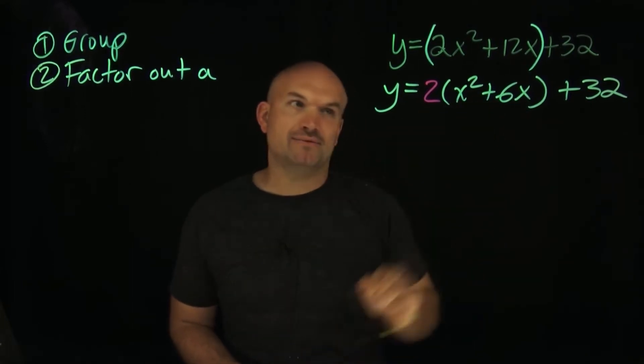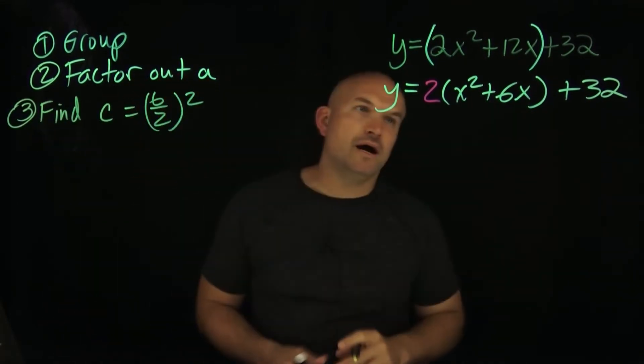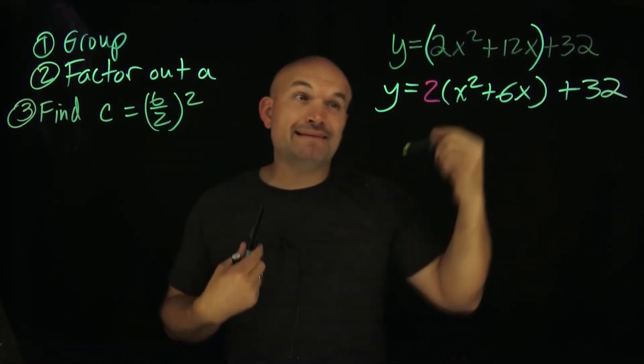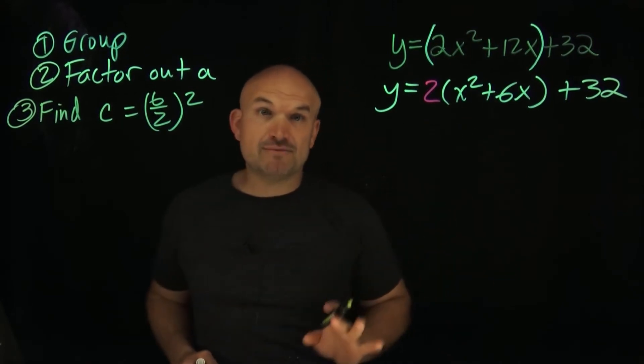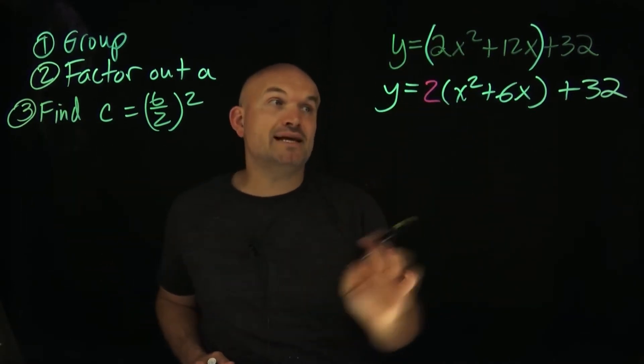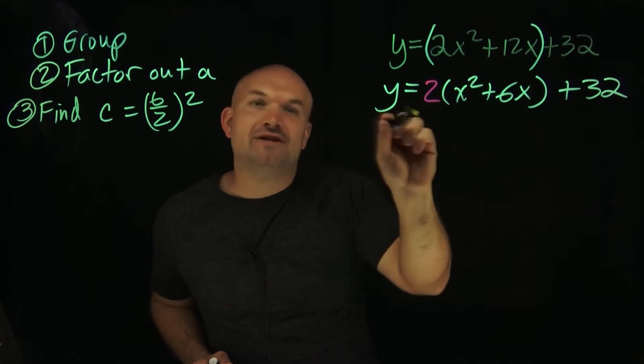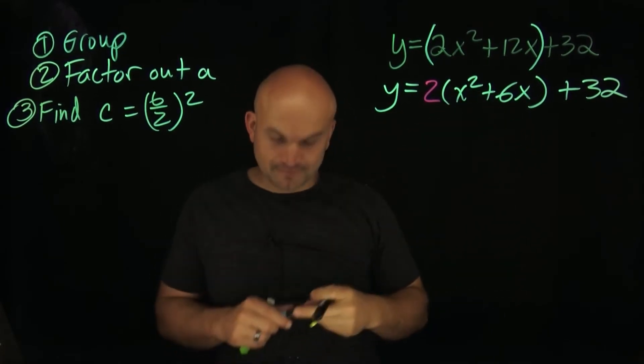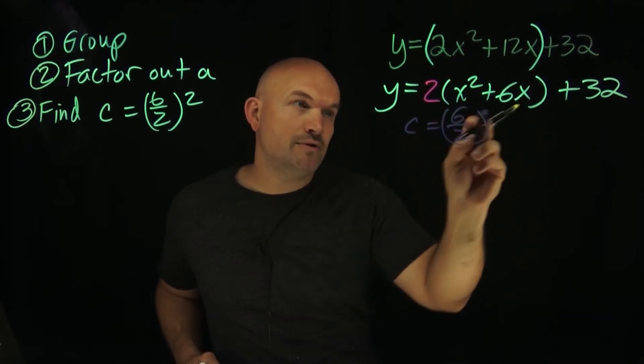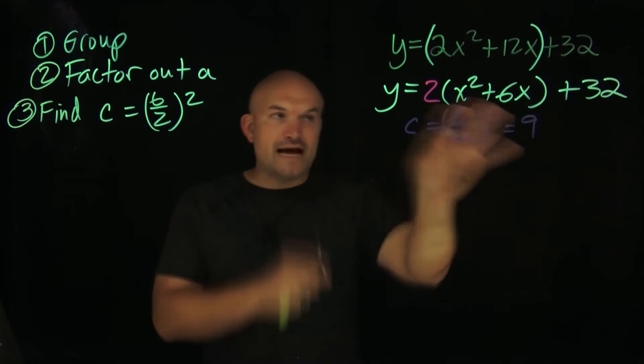Now, the next thing we need to do is we need to complete the square here. We need to find the value C that completes the square. Remember C is the value that is going to complete the square. When we're talking about our b divided by 2 squared, we're talking about the middle term of our quadratic. Now, a big mistake that students will make is that they'll go back to the b from the original equation. Don't do that. Take the b here that you've already factored out the 2. This is the equation that we're going to want to complete the square with. So when I'm finding my value C, I'm going to take my 6, which is this b, divided by 2 and square it. Six divided by 2 is 3. Three squared is going to equal 9.